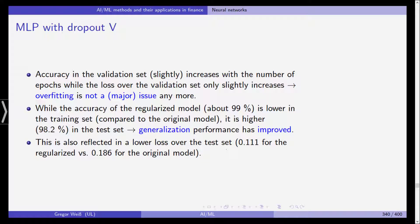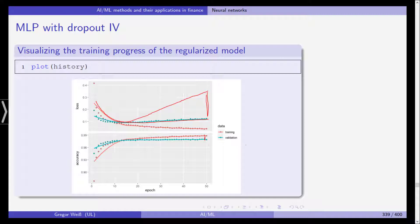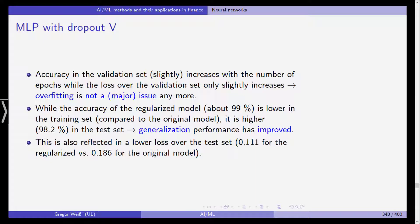Accuracy in the validation set slightly increases with the number of epochs while the loss over the validation set only slightly increases. So overfitting is not a major issue anymore. It still increases slightly until epoch 50 but it's not a major issue as before.